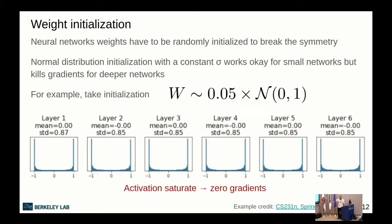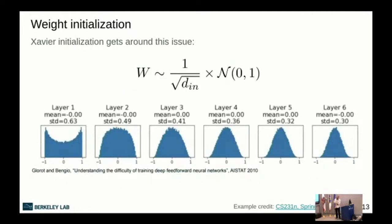What if we use a larger standard deviation? That doesn't work either — activations become saturated at -1 and 1 (with sigmoid activations). Even using a larger standard deviation with a normal distribution doesn't help; you get saturation and near-zero gradients almost everywhere. So we need other initialization methods.